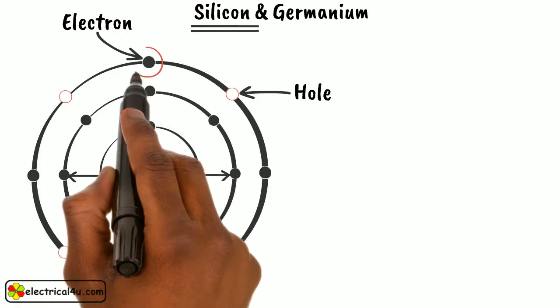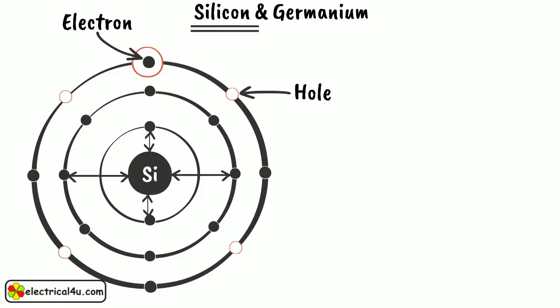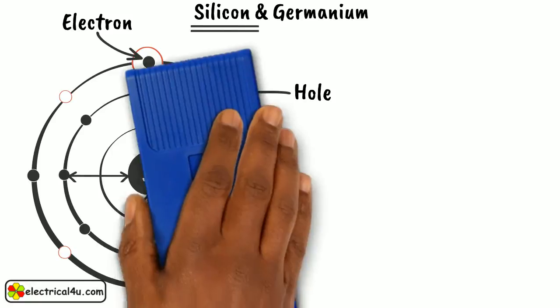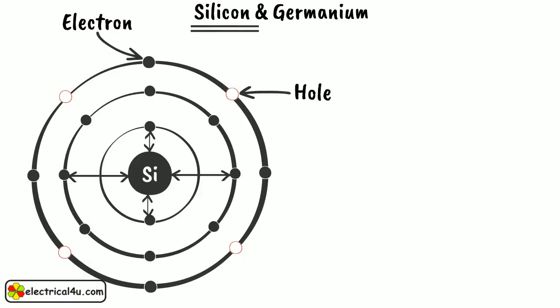Electrons in the outermost orbit are comparatively loosely bound with the nucleus. This means a small amount of energy will be required to take out an electron from the outermost orbit. When an electron leaves its orbit, it becomes a free electron.